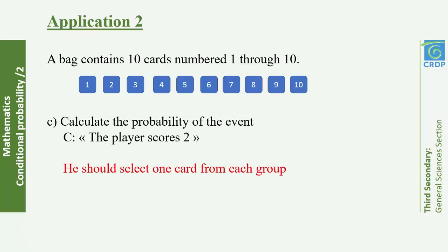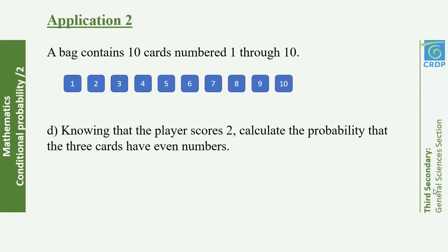Part C: Calculate the probability that the player scores 2. This requires one card from each group: the card from {1,2,3} gives −1, from {4,5,6,7} gives +1 (they cancel), and from {8,9,10} gives +2, totaling 2. So P(C) = C(1,3) × C(1,4) × C(1,3) / C(3,10).